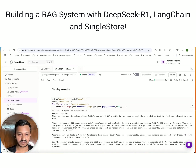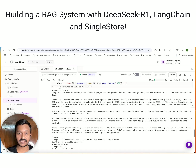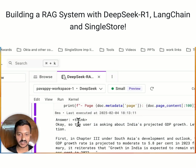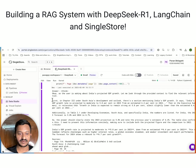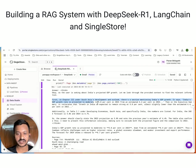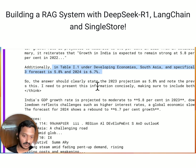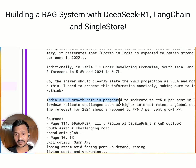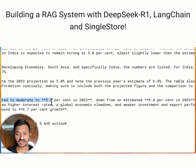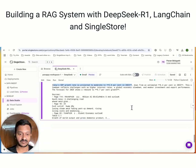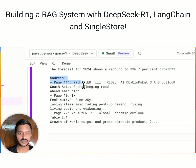Once we ask the system to display the results, we can see how it displays the result - it starts thinking with the chain of thought process and reasoning. First, in Chapter 3 under South Asia's Development Outlook there's a section, and additionally in Table 1 under Developing Economies, South Asia. So India's GDP growth rate is projected to moderate to 5.8% in 2023. This answer is actually in the PDF we loaded and it also provides sources.